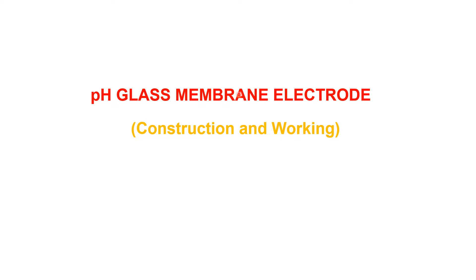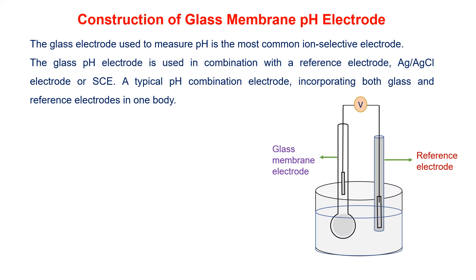Construction and working of pH glass membrane electrode. The glass membrane electrode used to measure pH is the most common ion-selective electrode. The pH electrode is selective for hydrogen ion, so it is an example of an ion-selective electrode.